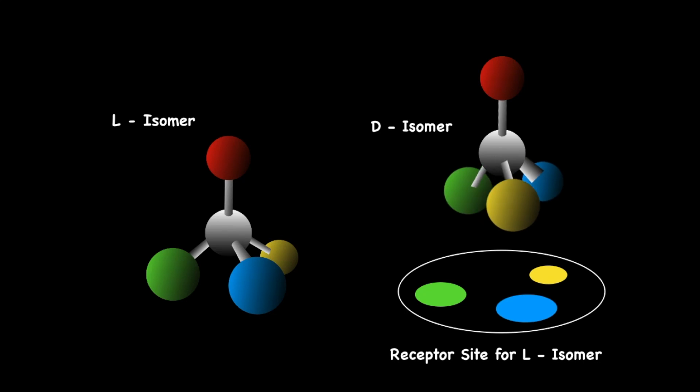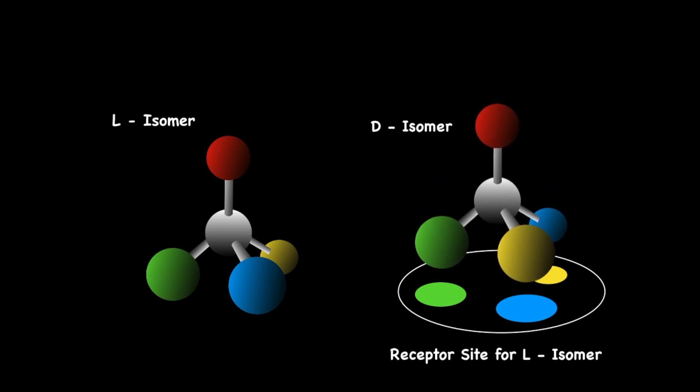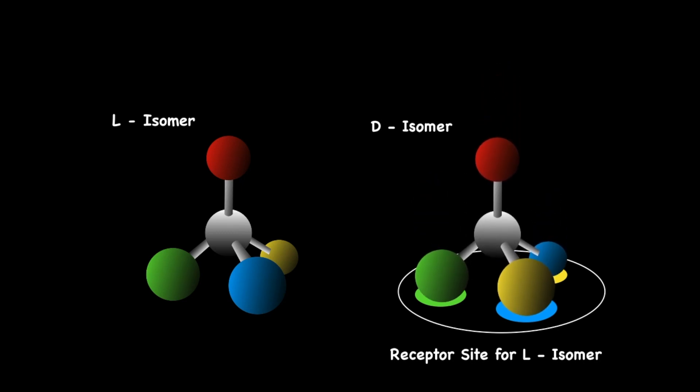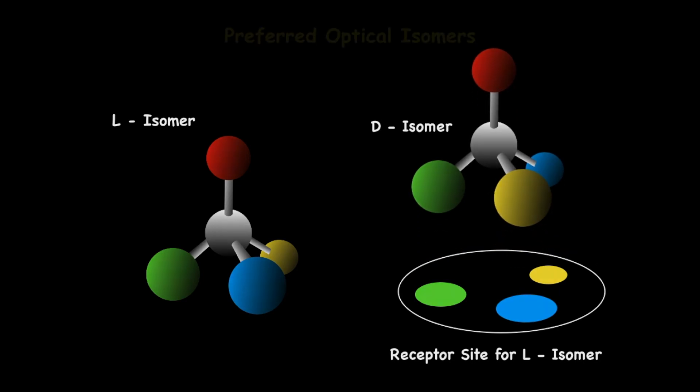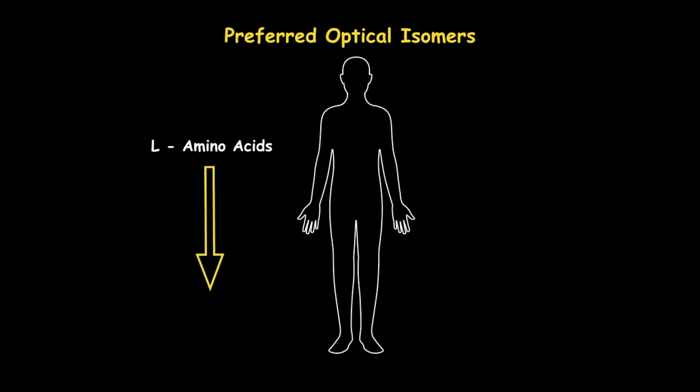Now, you can rotate this molecule as much as you like, but what you'll find is that it's physically impossible to get each of its regions to bind perfectly in alignment with the receptor binding site. In fact, this is the reason why the L-isomer of amino acids are preferred over the D-isomer in human metabolism, as there exists an overabundance of its corresponding L-receptors.